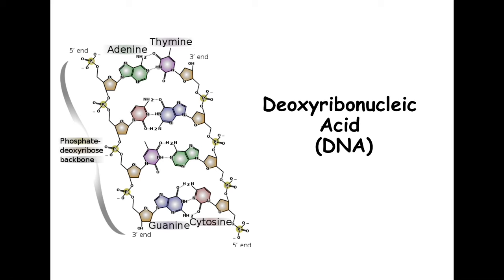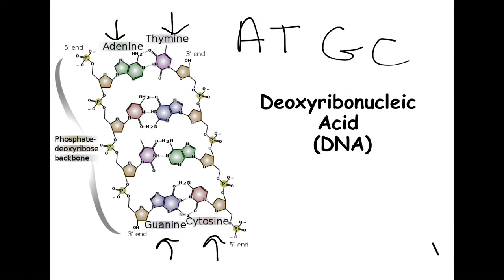Let's take a closer look at DNA. DNA stands for deoxyribonucleic acid. The sugar that makes it up is called deoxyribose, which makes up the backbone of the DNA. DNA is double-stranded — there's one strand and here's another strand. In addition to that deoxyribose sugar, we have nucleotides or nitrogenous bases: adenine, thymine, guanine, and cytosine — traditionally known as A, T, G, and C.